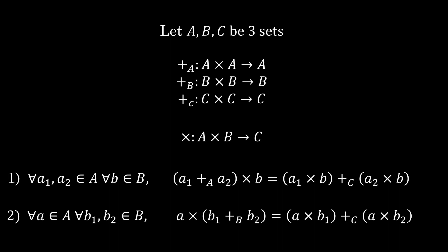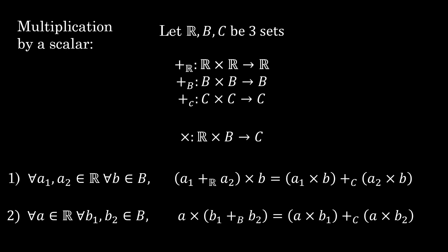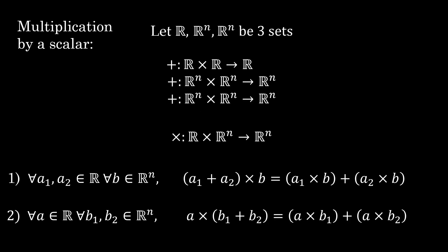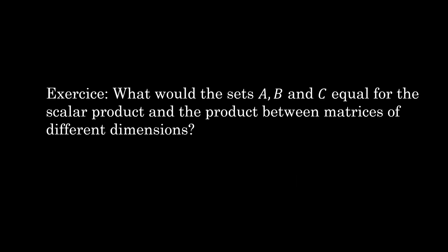When we write the conditions of distributivity, we notate the additions accordingly. So for the multiplication of a vector of dimension n by a scalar, we would have A equals ℝ and B equals C equals ℝⁿ. In practice, we can deduce by observing the nature of the objects that the two additions are different, so we don't really need to differentiate them using an index notation.